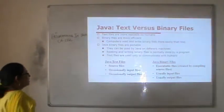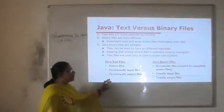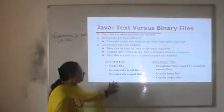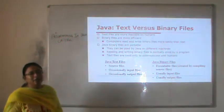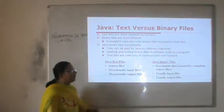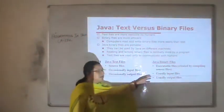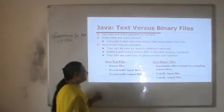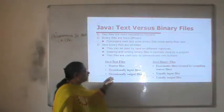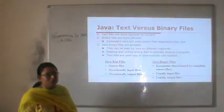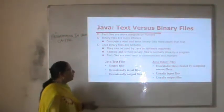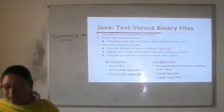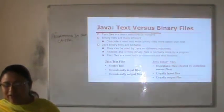There is a difference between Java text files and Java binary files. Java text files are source files in which the program is written, while Java binary files are executable files. For example, when we write a program we create a .java file — that is the Java text file. When we compile that file it becomes an executable file, the .class file — that comes under Java binary files. We occasionally use Java text files for output, but usually do processing with binary files.